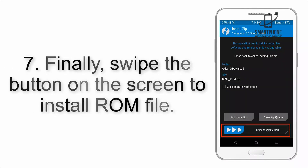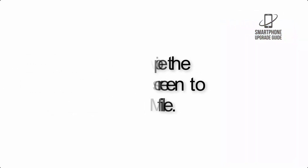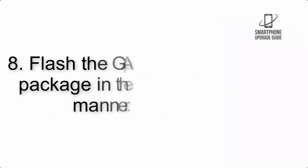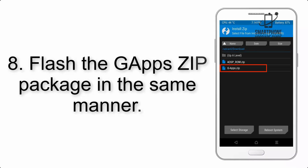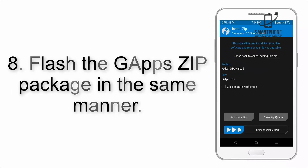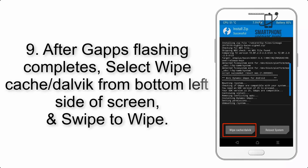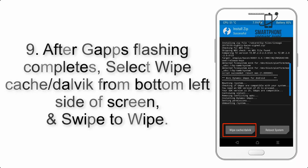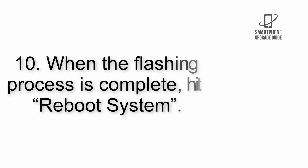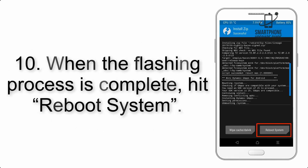Step 6: Navigate to the storage and select the ROM zip file. Step 7: Swipe the button on the screen to install the ROM file. Step 8: Flash the GApps zip package in the same manner. Step 9: After GApps flashing completes, select Wipe Cache and Dalvik from the bottom left side of the screen and swipe to wipe.